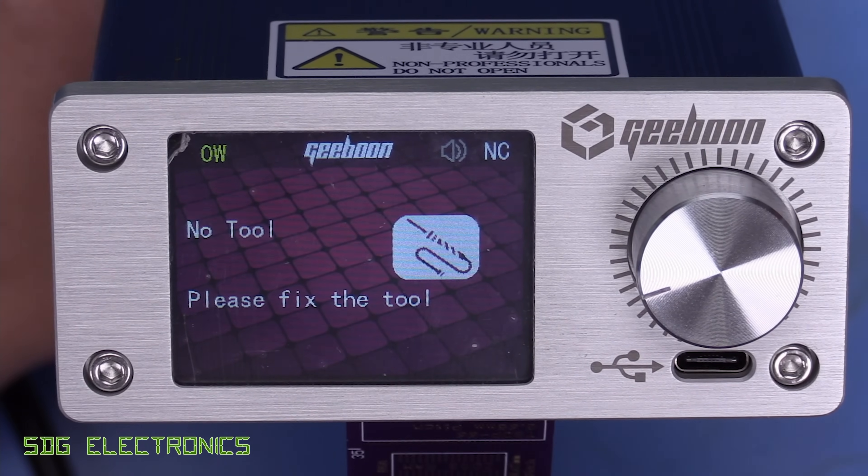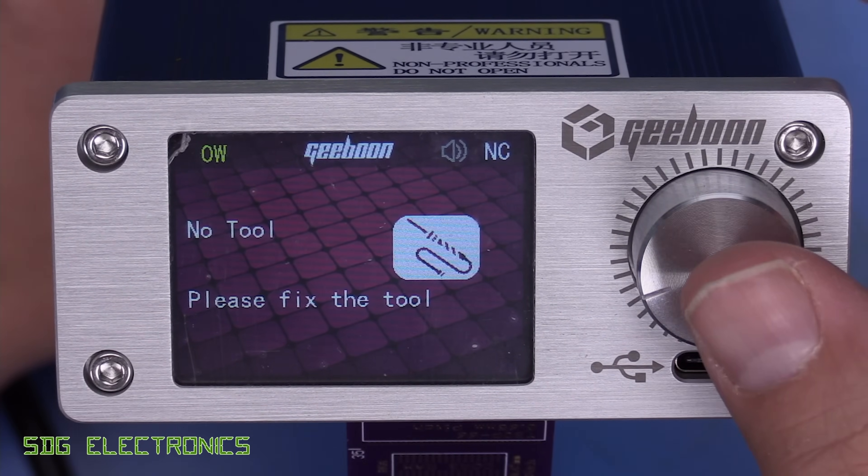Let's take a look at the user interface. So at the moment, there's no handpiece connected, so it says no tool. But let's go into the menu. So we hold down the rotary encoder.